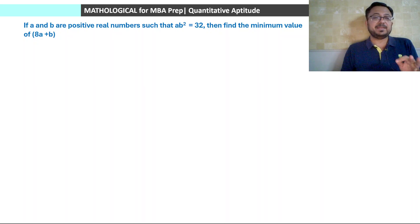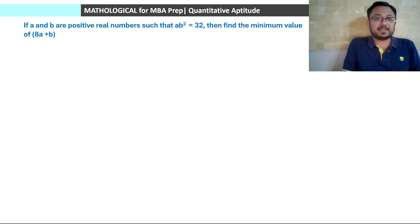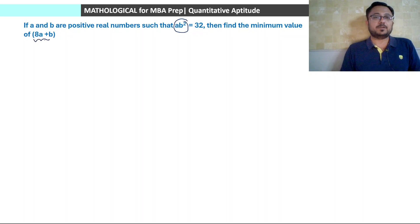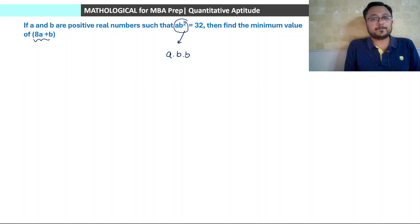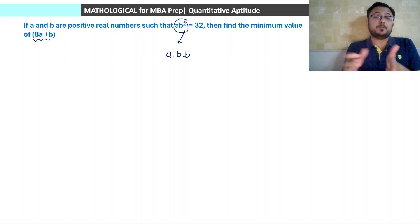If a and b are positive real numbers such that a into b squared is equal to 32, then find the minimum value of 8a plus b. Here a into b into b — the product — is given as 32, and we need to find the minimum value of 8a plus b.